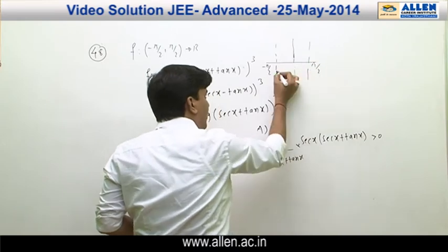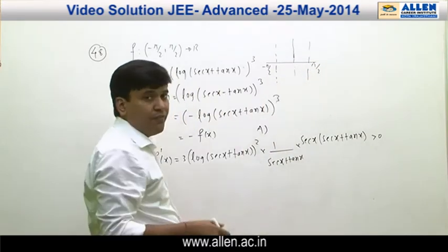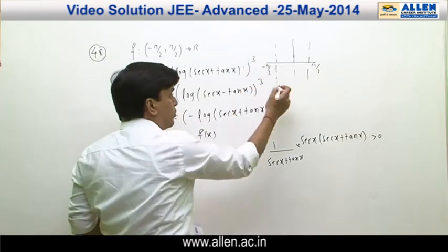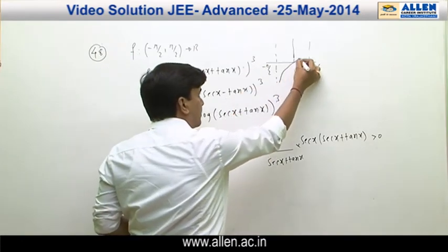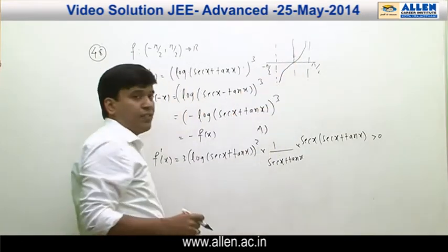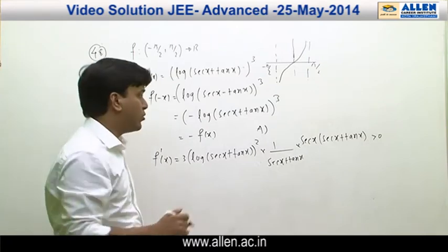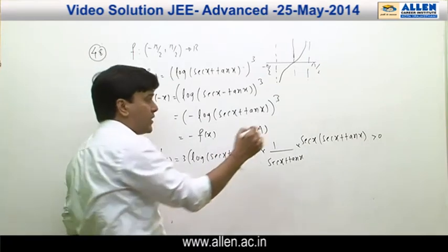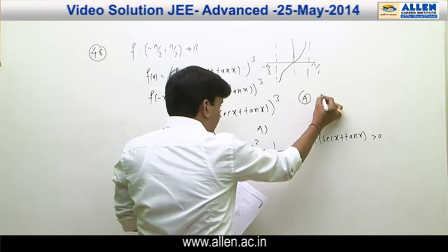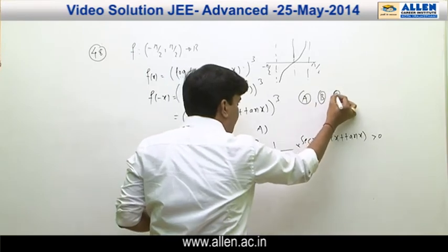Sketching the graph on the interval (−π/2, π/2): the function approaches −∞ as x → −π/2⁺ and +∞ as x → π/2⁻. Hence the function is both one-one and onto. The correct answers are A, B, and C.